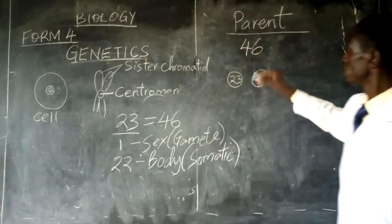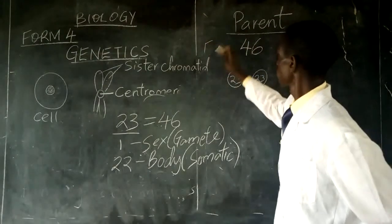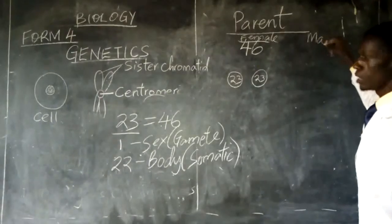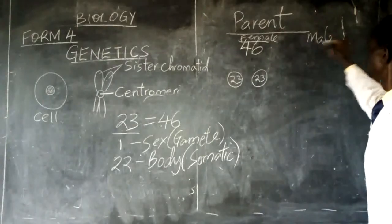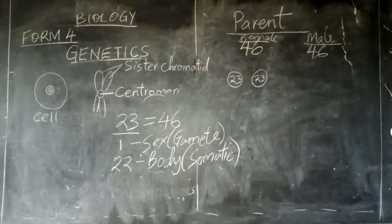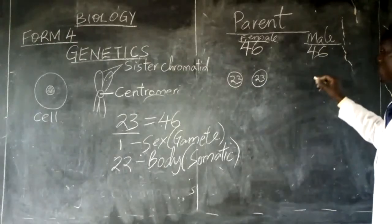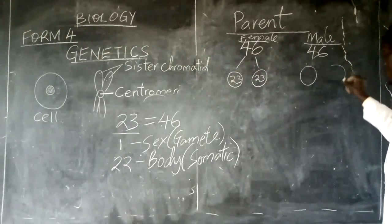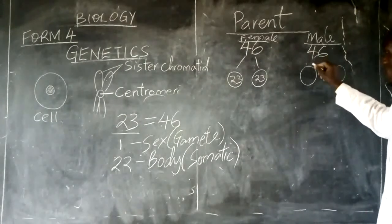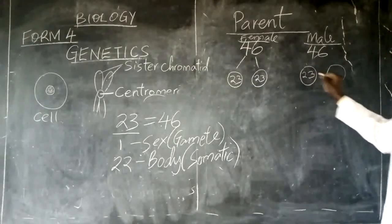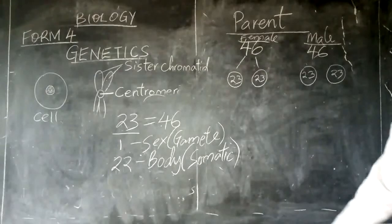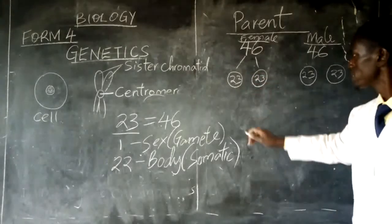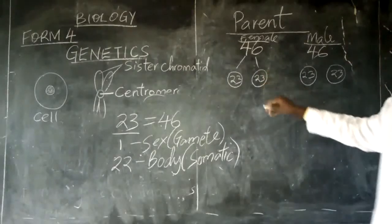This parent — let us say the female, or the mother — has 46 chromosomes. For the male as well, he also has 46 chromosomes in the body. These 46 chromosomes will segregate, leading to the formation of two gametes, each with 23 chromosomes. These 23 chromosomes from the male will pair up with the 23 chromosomes originating from the female parent.